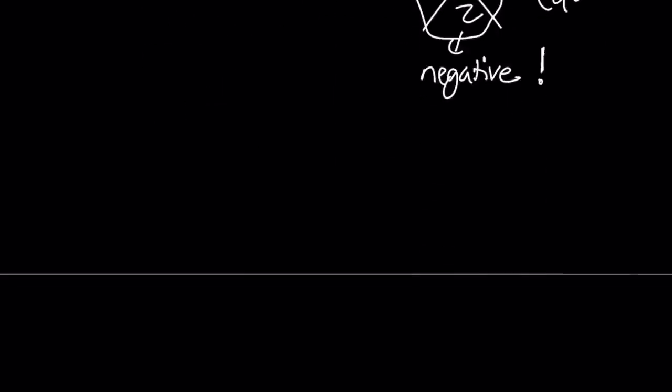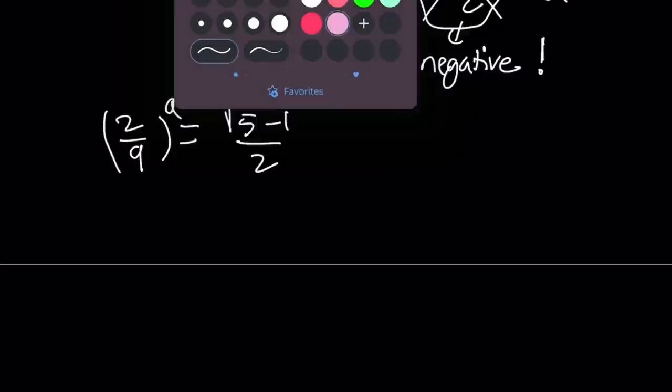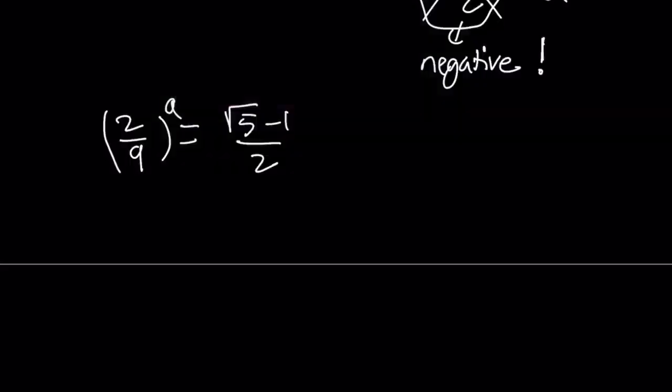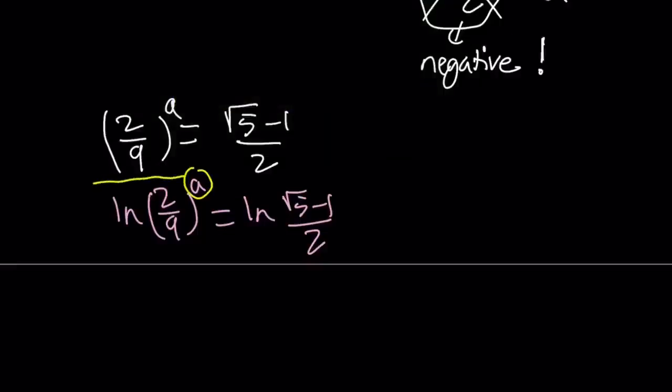How do you solve this? Let's rewrite it. 2 over 9 to the power a equals negative 1 plus root 5. I'm going to write it as root 5 minus 1 over 2. And then at this point, how do you solve this equation? Well, you have to get rid of the exponent. So let's ln both sides. ln meaning natural logarithm. ln 2 over 9 to the power a equals ln root 5 minus 1 over 2. So what do we get from here? We can go ahead and bring this a down. And now we're going to get a times ln 2 over 9 equals ln root 5 minus 1 over 2.